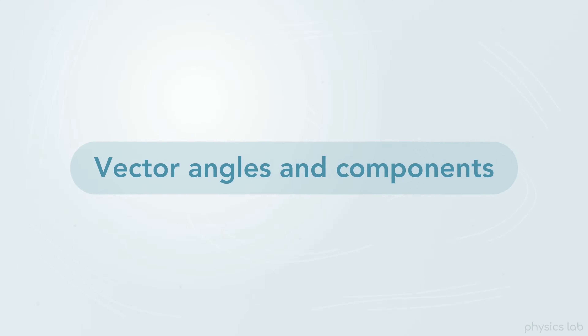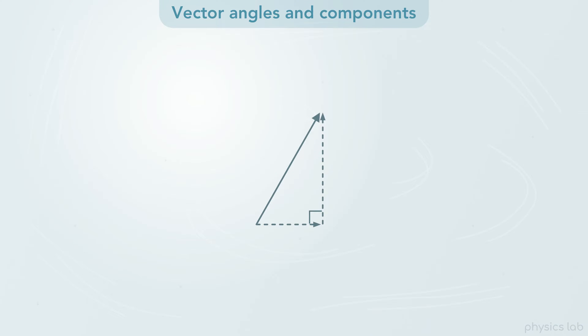Let's talk about the different ways to describe vector angles, and how to keep track of positive and negative components. It's important to note that we always measure the angle at the start of a vector, not at the end of the vector.